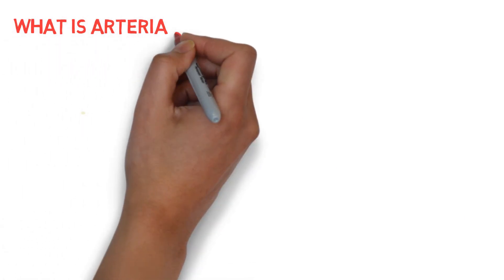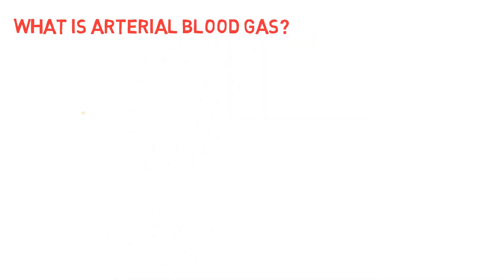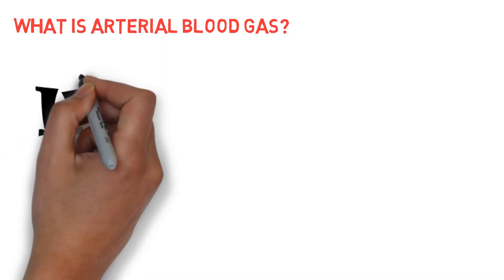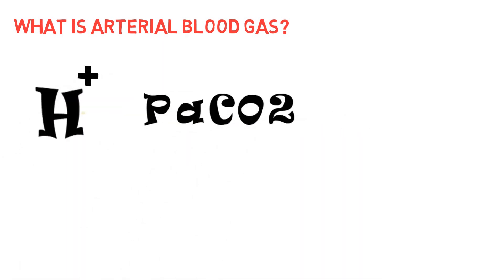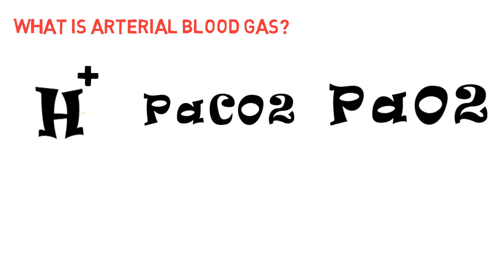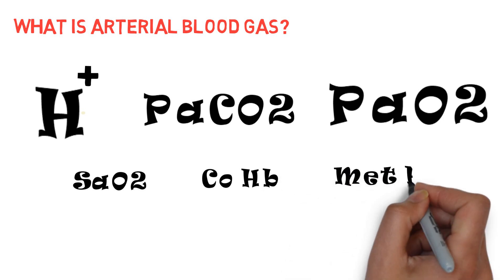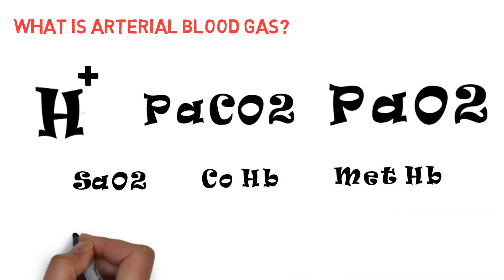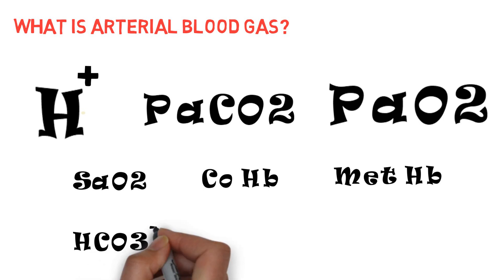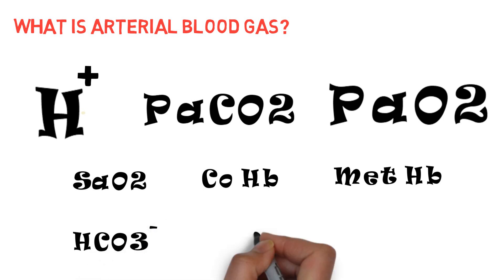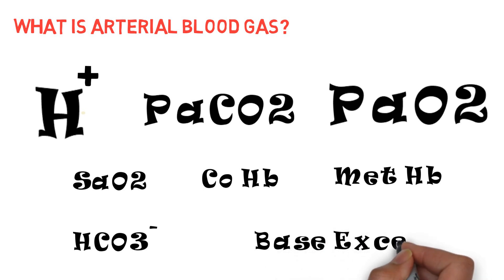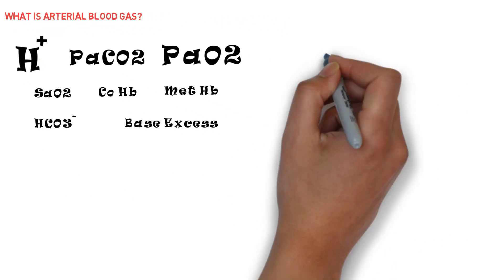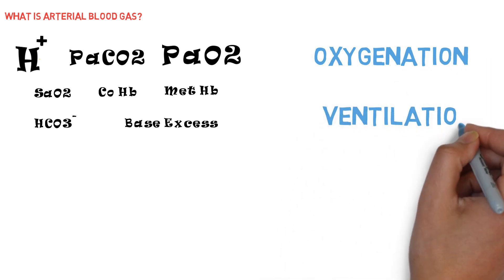What is arterial blood gas? The term arterial blood gas refers to measurements of hydrogen ion concentration, partial pressure of carbon dioxide, and partial pressure of oxygen in arterial blood. Measured values for hemoglobin saturation with oxygen, carboxyhemoglobin, and methemoglobin may be included. Many laboratories also report calculated values of oxygen saturation, bicarbonate concentration, and base excess. These measurements assess lung oxygenation, ventilation, and acid-base status.